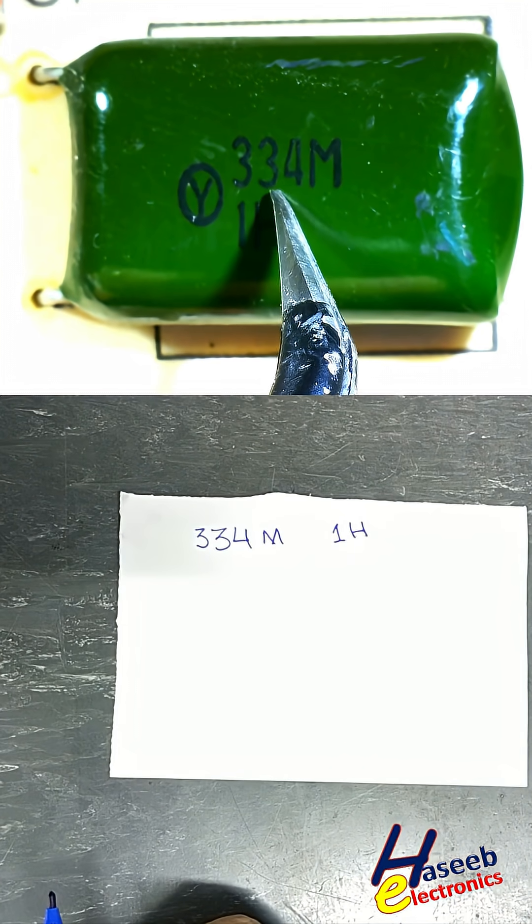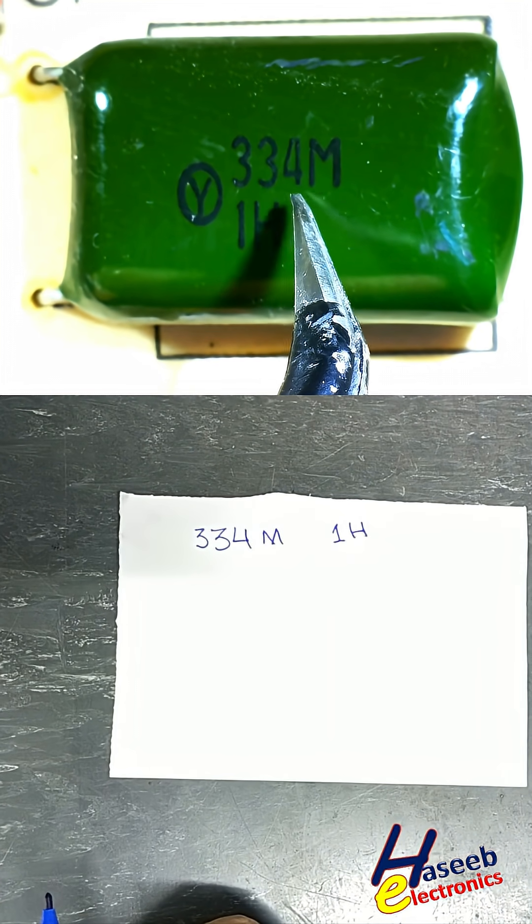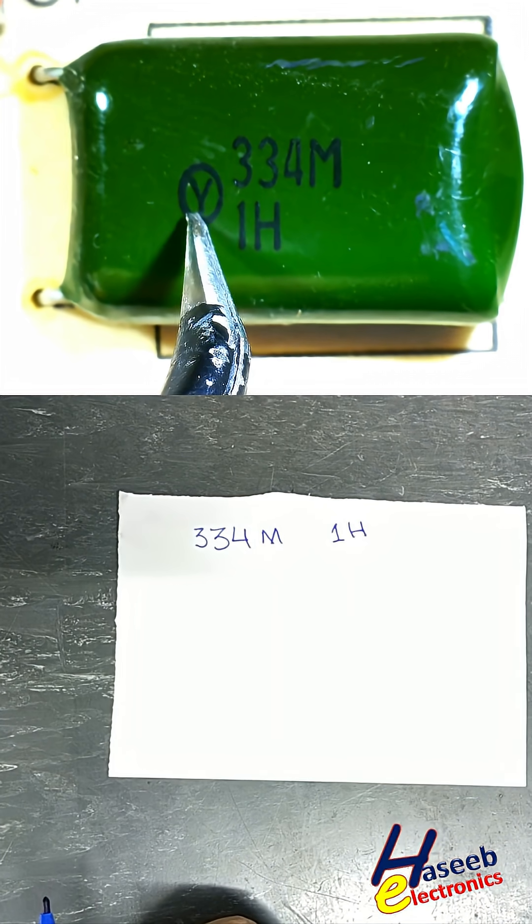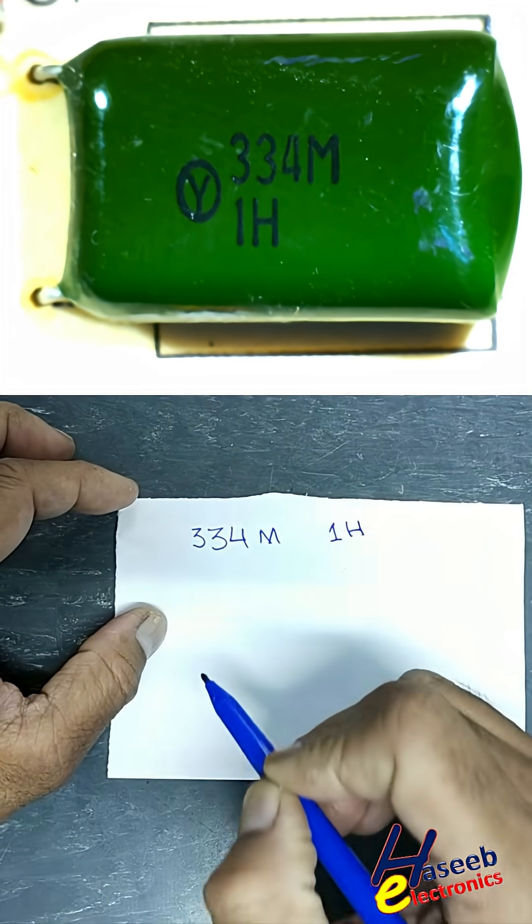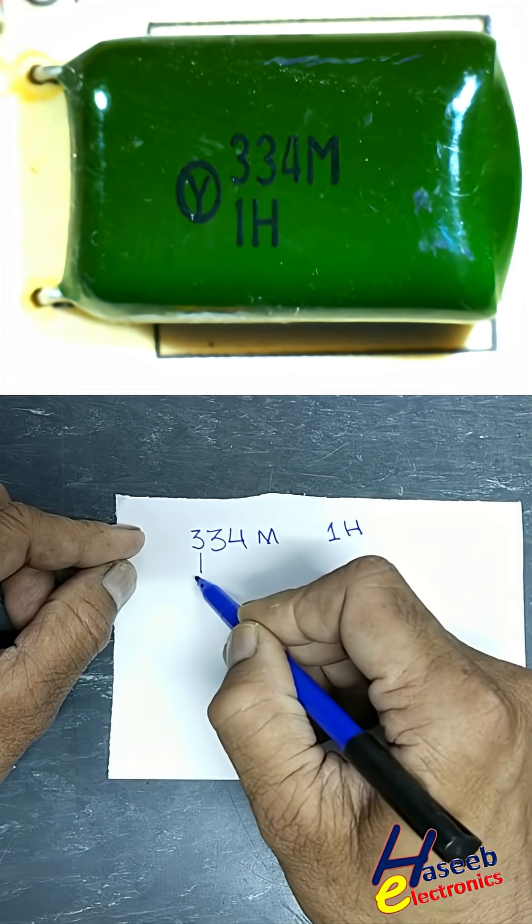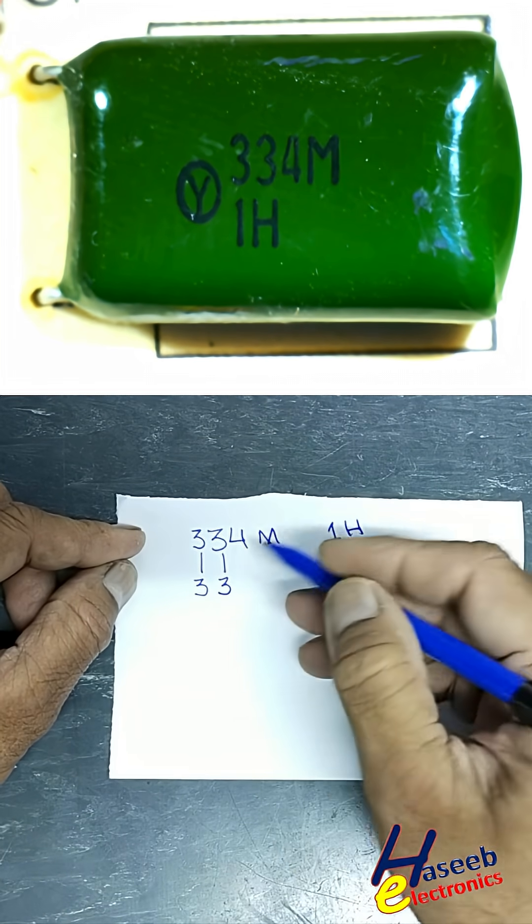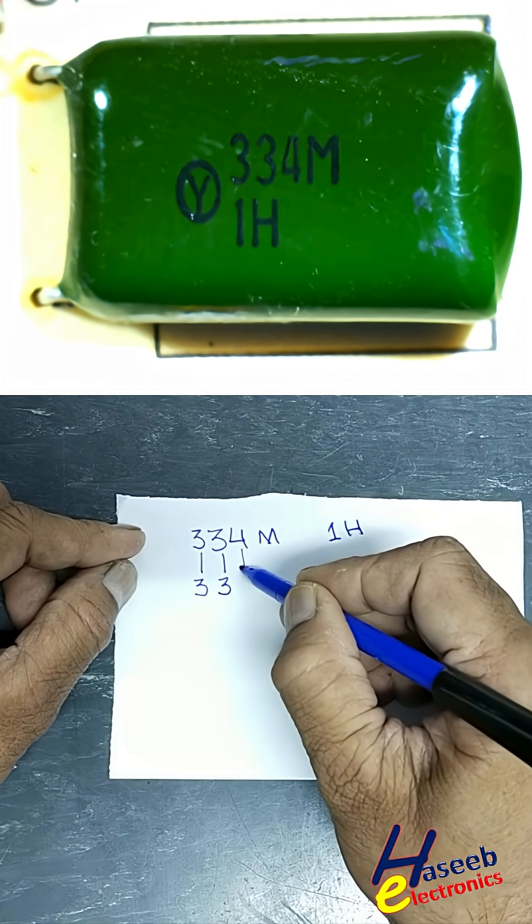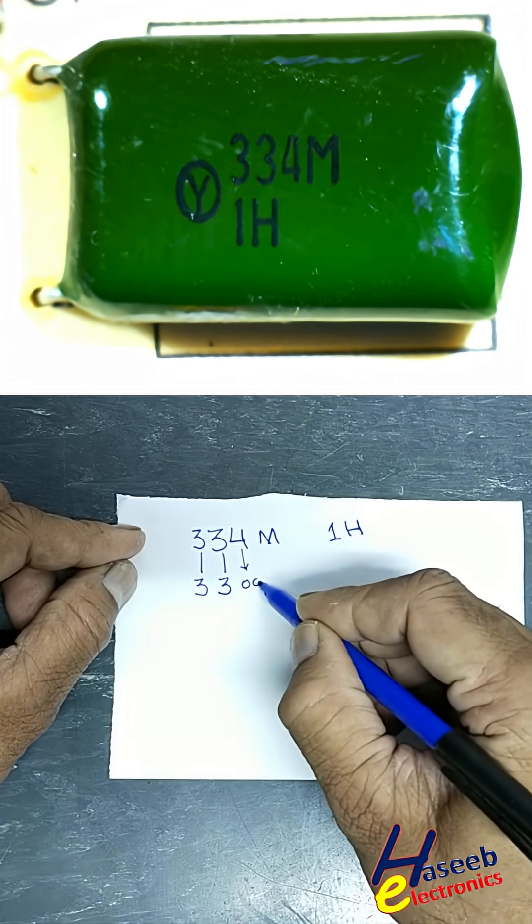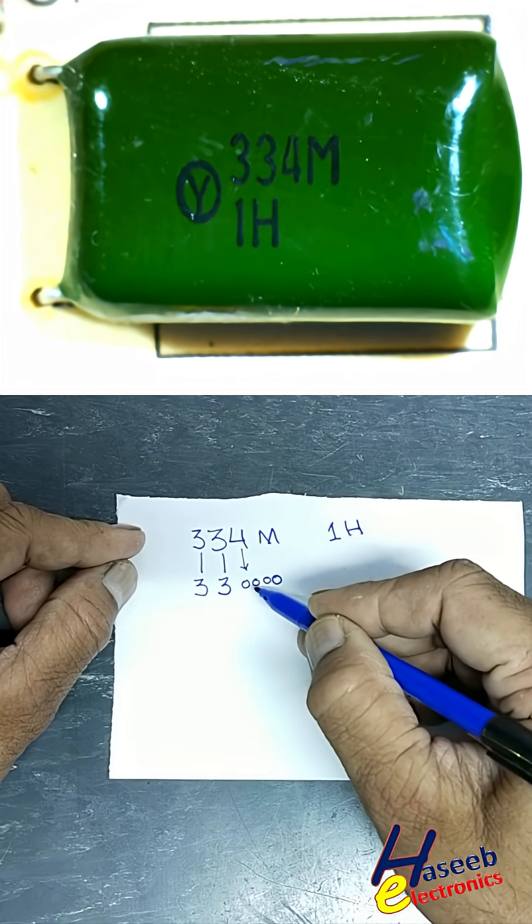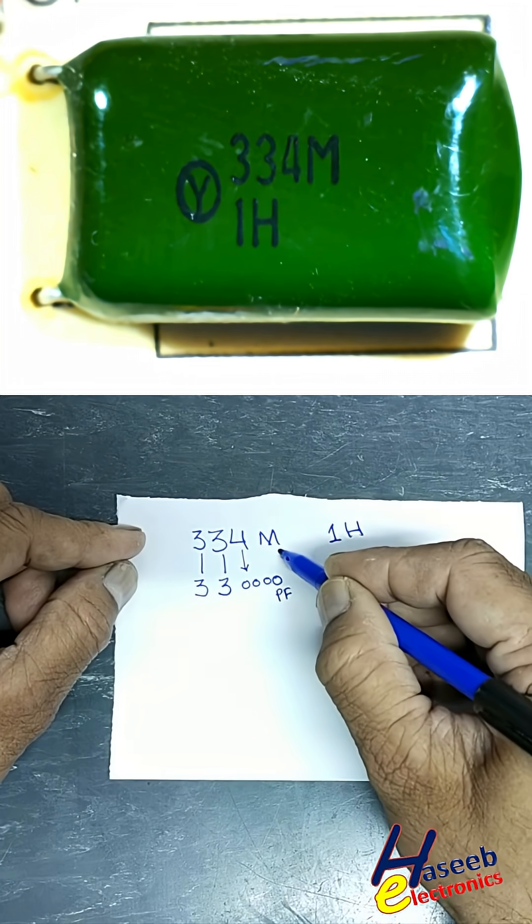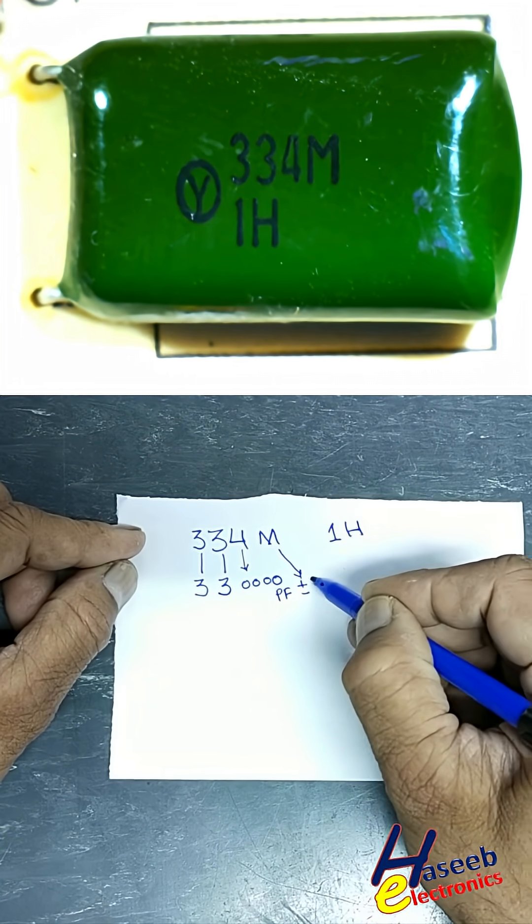This metallized polyester film capacitor marked 334M 1H shows the manufacturer logo and a coded capacitance format. The 334 code represents: 3 as the first significant digit, 3 as the second significant digit, and 4 as the number of zeros or multiplier - 10 raised to power 4 picofarad. The M indicates tolerance of plus minus 20%.